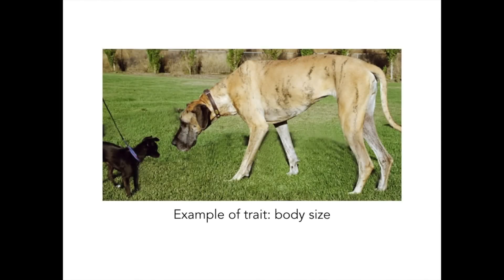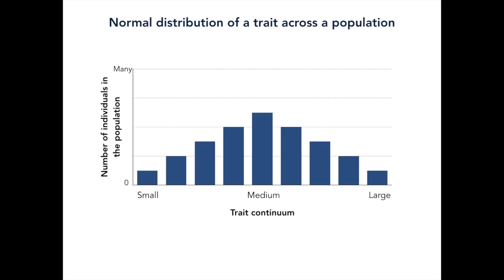To begin, let's think about distribution of a trait in a population. This can be any trait that exists along a continuum in a normal distribution. Keep in mind that not all traits follow this distribution pattern — we are not concerned with those at the moment.